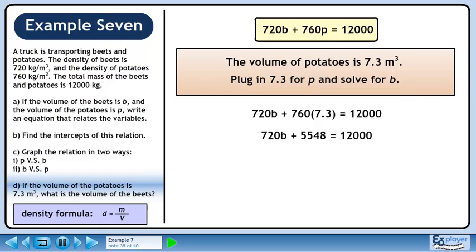Next we get 720b plus 5548 equals 12,000. Subtract 5,548 from both sides to get 720b equals 6,452. Divide both sides by 720. The value of b is 8.96.